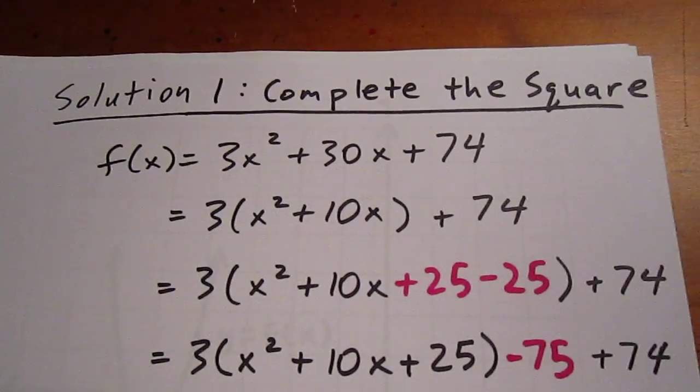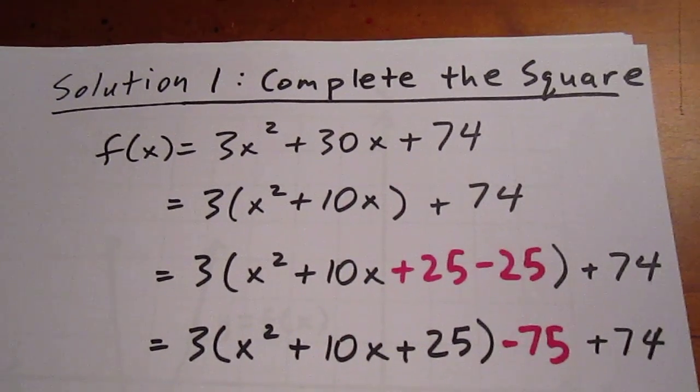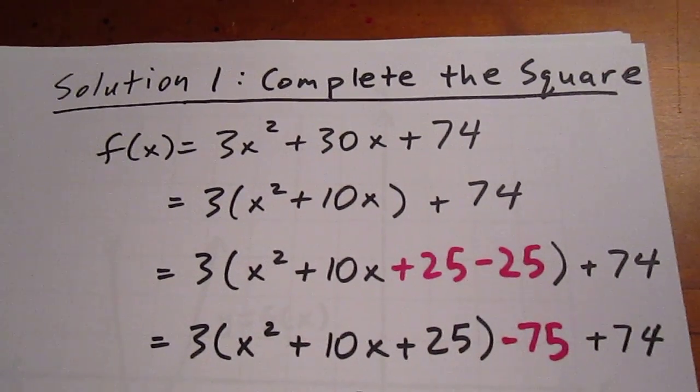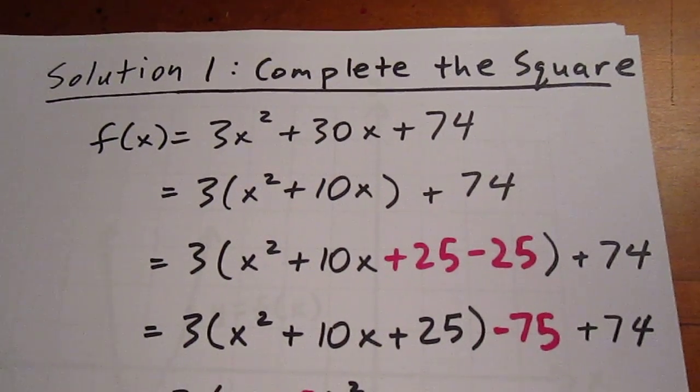Completing the square involves factoring out the 3 from the first two terms, taking half the value of 10, squaring it, and adding that number—the 25—and subtracting it inside the bracket.